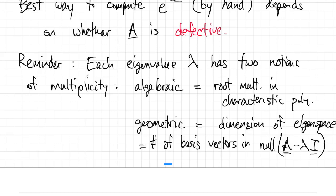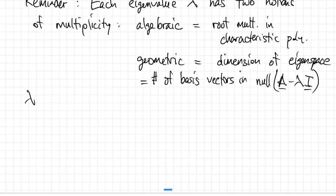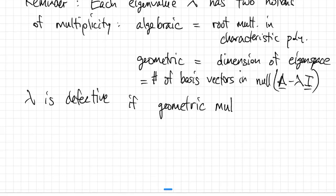And we said that the eigenvalue is defective if its geometric multiplicity is less than its algebraic multiplicity.